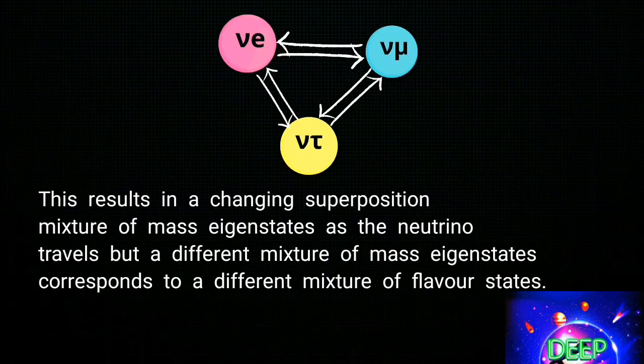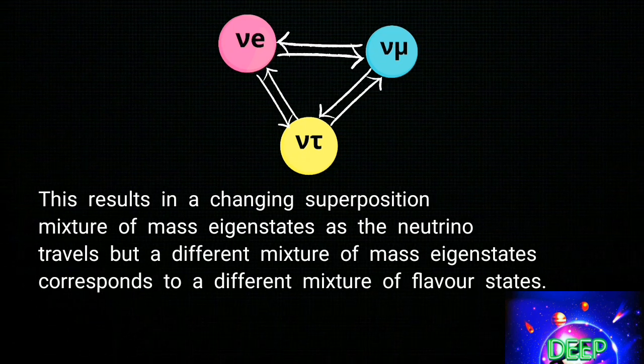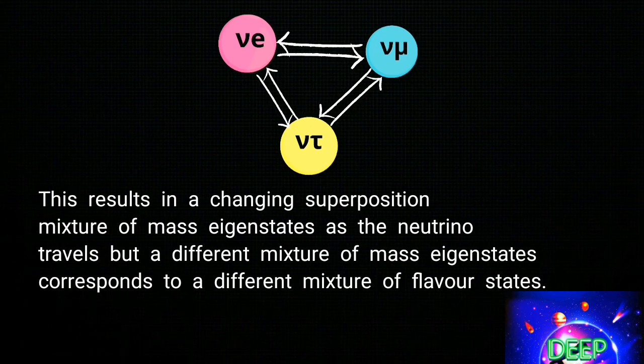In other words, a flavor state such as a muon neutrino is a mixture of different masses. If it interacts, it may do so as a flavor state different from its original state.